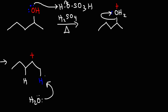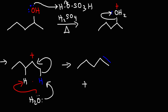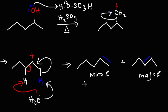So water is going to abstract a proton and we're going to form a double bond, leading to one possible product. Water can also abstract the other proton adjacent to the carbocation intermediate, giving us a different product. So we can get either 1-pentene or 2-pentene. But 2-pentene is going to be the major product — this is the minor product. The major product is known as the Zaitsev product; the minor product is the Hofmann product.